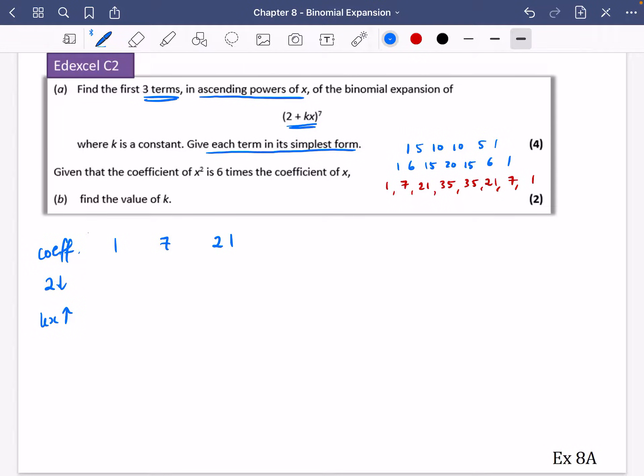We're only doing it for the first three. So it's going to be 1, 7 and 21. So we'll have 2 to the power of 7, 2 to the power of 6, 2 to the power of 5. We'll have kx to the power of 0, kx to the power of 1. And kx all squared.